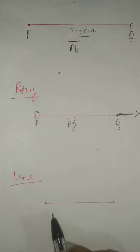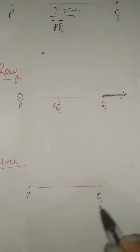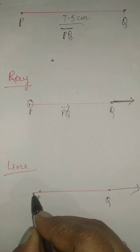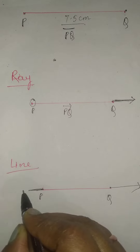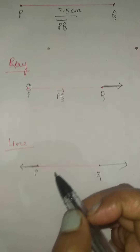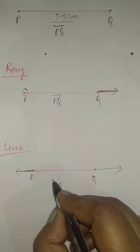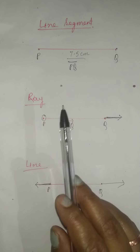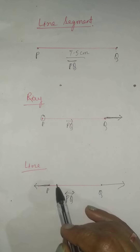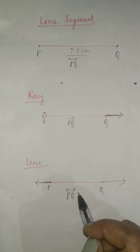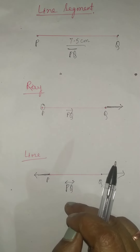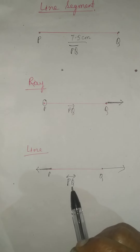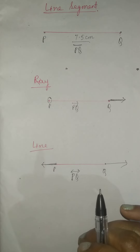Now what about a line? We give the points P and Q. It is extended on the right-hand side and also on the left-hand side, and it is written as PQ with arrows on both sides. A line doesn't have any end point. Ray has one end point and line segment has two end points. A line also cannot be measured with a ruler, and it cannot be drawn on a piece of paper — we just put an arrow at both ends.